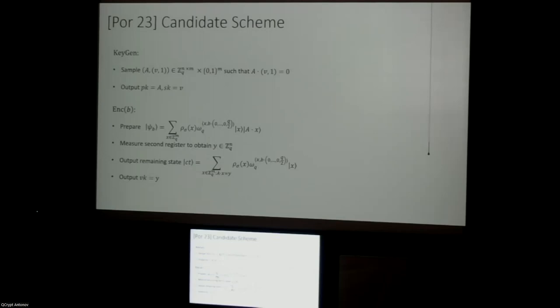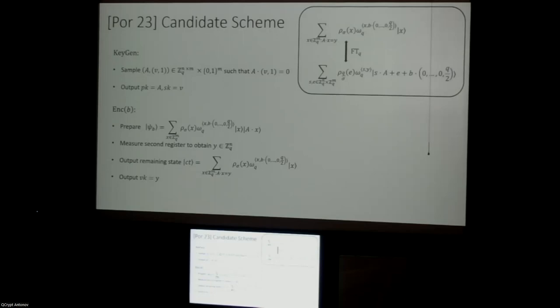The reason this is quite similar to dual Regev encryption is as follows. This Gaussian-weighted state — if I apply the Fourier transform over Z_q to it — I end up with a state that is exactly a superposition over dual Regev ciphertexts encrypting bit B, over all random strings S and random error vectors E. So if I apply the Fourier transform to my ciphertext and measure it, I get a dual Regev encryption of B and can use the secret key to decrypt. That's how decryption works.